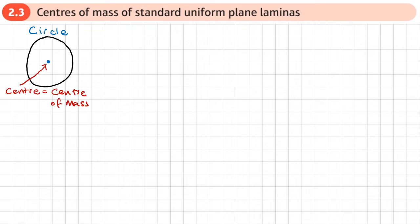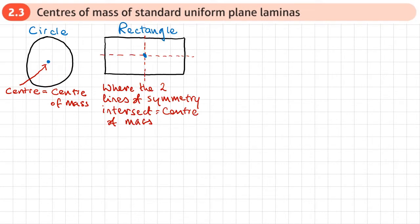The first standard result: if we have a circular lamina, a circle, then the center of mass is at the center of the circle. The second one is a rectangle or rectangular lamina. With all the shapes I'm going to be showing you, we're assuming they're uniform in their mass — not thicker or heavier in any one place. The center of mass of a rectangle is where the two lines of symmetry intersect.